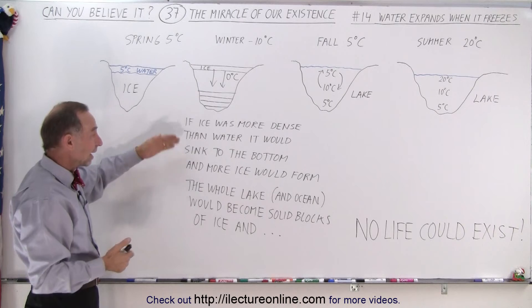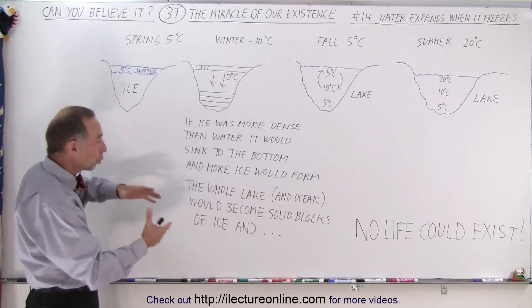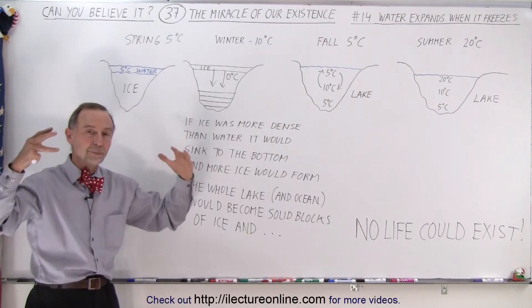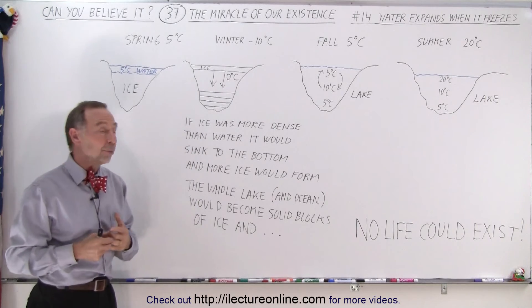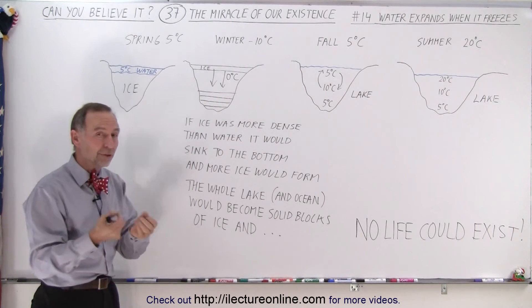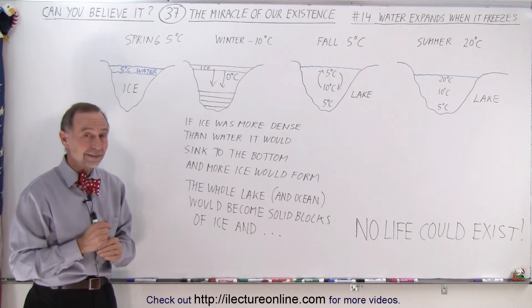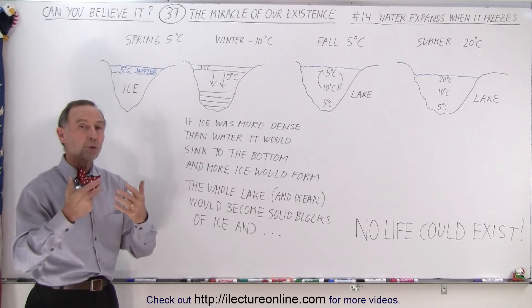So that means that the whole lake would fill with ice, the whole oceans would fill with ice, and no life would be able to exist in those big blocks of ice. The reason why this doesn't happen is because of the very unique property that ice floats on top of water because it's less dense. And again, water is so unique in that property.